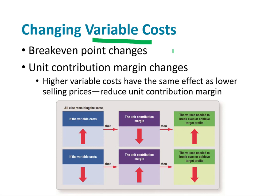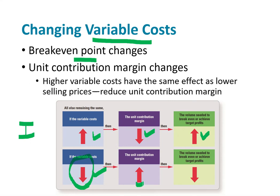When variable costs change, break-even points change. There's an indirect relationship here too. Higher variable costs reduce the unit contribution margin: if variable costs go up, the contribution margin goes down, and you need to sell more units. If variable costs go down — say you find a cheaper source of raw materials or labor — your unit contribution margin goes up and you need to sell fewer items to break even.